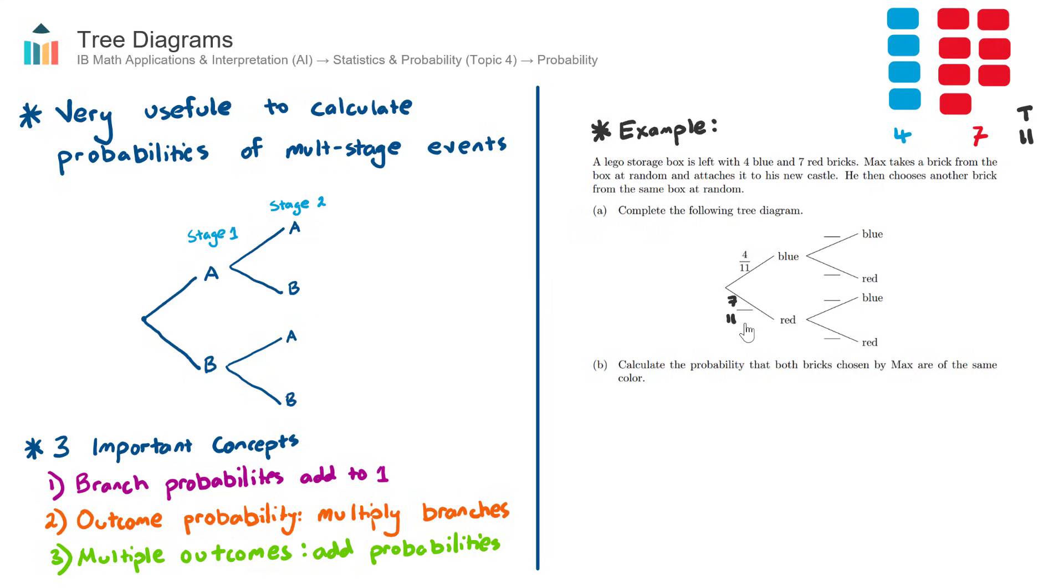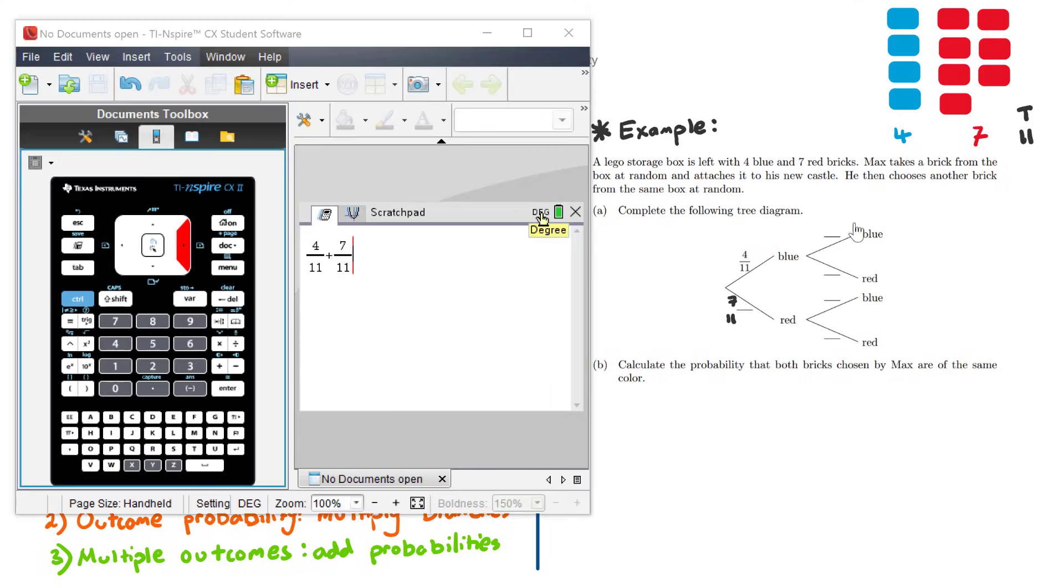The important concept here is that these two probabilities need to add up to one. Even if you had three different events - blue, red, yellow - all of the branch probabilities that come out of a certain point need to add up to one. If we check that here, 4/11 plus 7/11 equals 11/11, which is one.